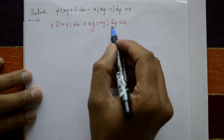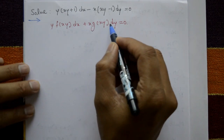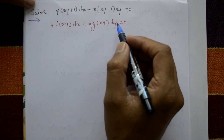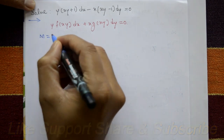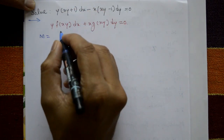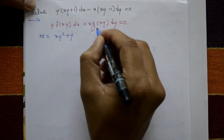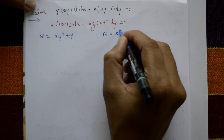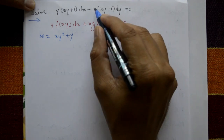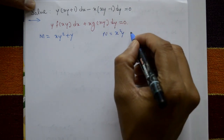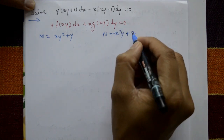This given equation is in the form y·f(xy) dx plus x·g(xy) dy equals 0. Find the solution. Take M equals x·y² plus y (opening the bracket), and N equals x²y minus x.